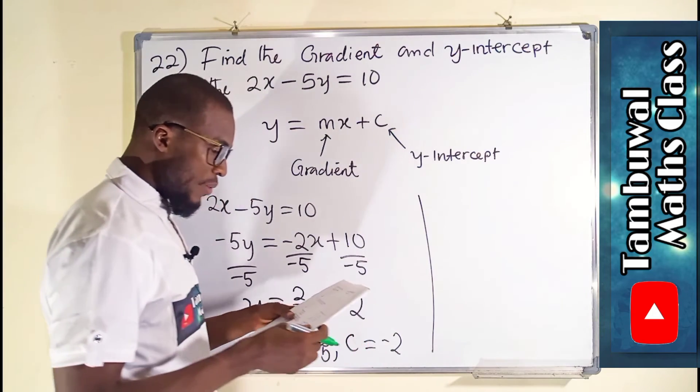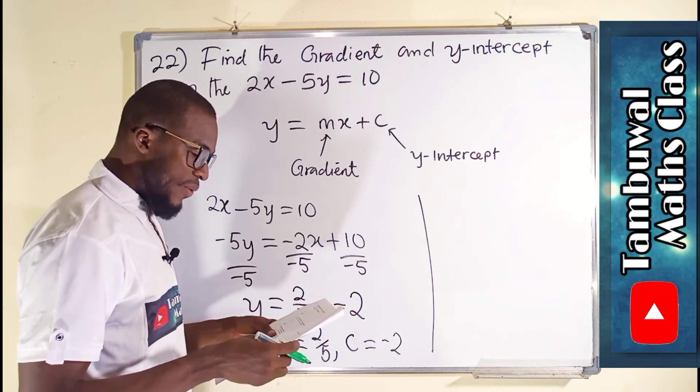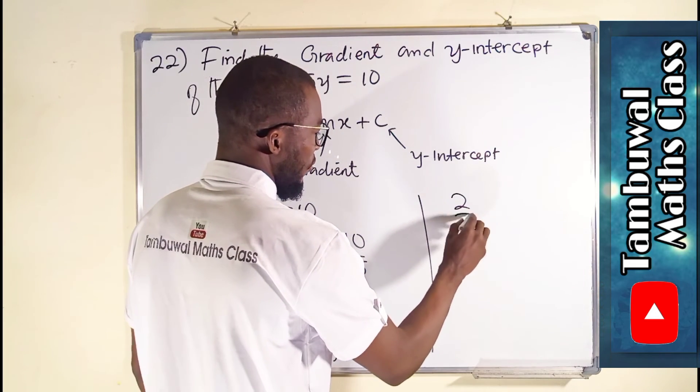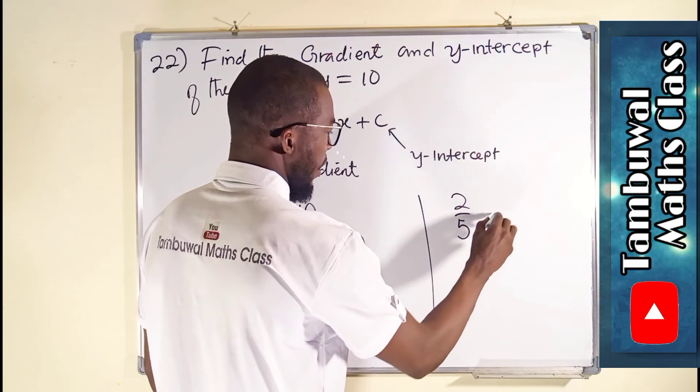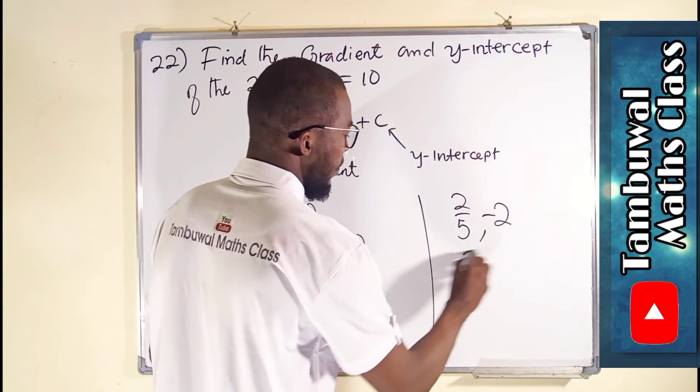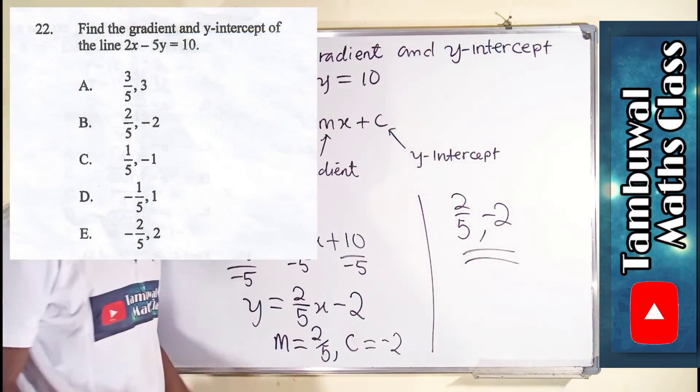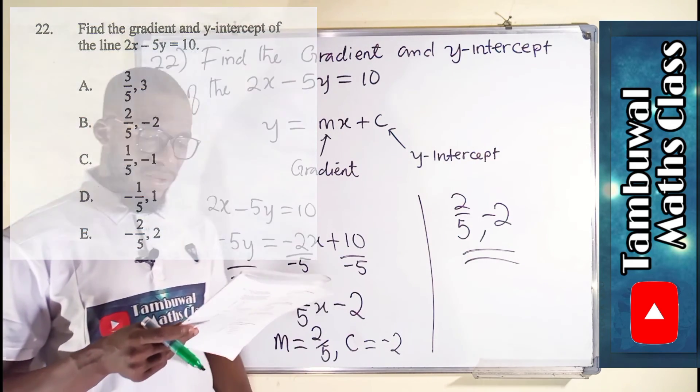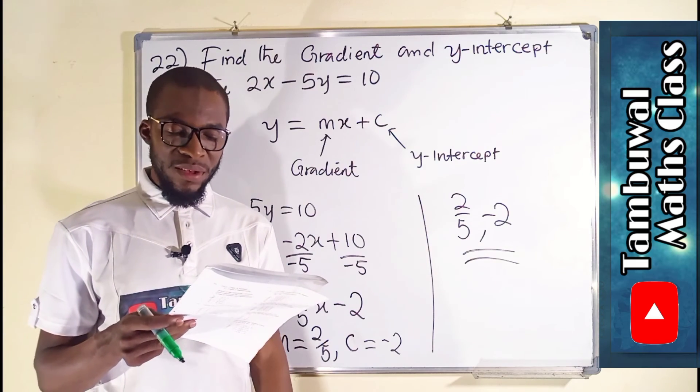Because the right option here, we can see it is 2 over 5, negative 2. So we can write them as 2 over 5 and negative 2. This is our answer. And it is the option B here.